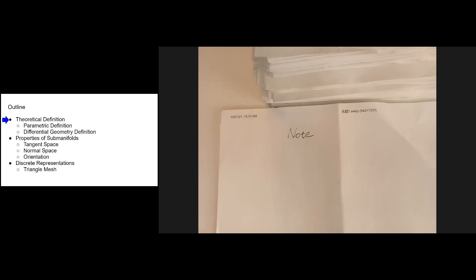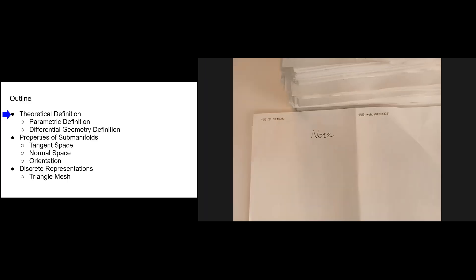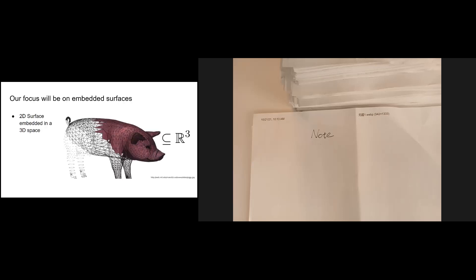I'm going to talk about two different definitions: the parametric definition and the differential geometry definition. Then I'm going to talk about some properties of submanifolds, which include tangent space, normal space, and orientation. Finally, we will bring things back to computer science and consider how to represent surfaces in a computer — in particular, we'll talk about triangle mesh. Today our focus will be on embedded surfaces.